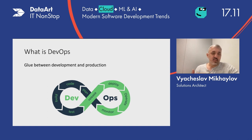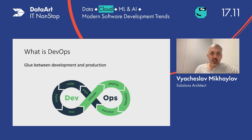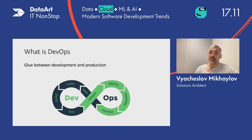DevOps fundamentally is glue between development and production. We do not ship our code directly to the client; we transfer it to DevOps hands. We expect DevOps to act pretty much the same way we act as developers — concerned about copy-paste, quality of code, automation, testing, and everything. We expect DevOps to do the same, or at least something that looks like this.